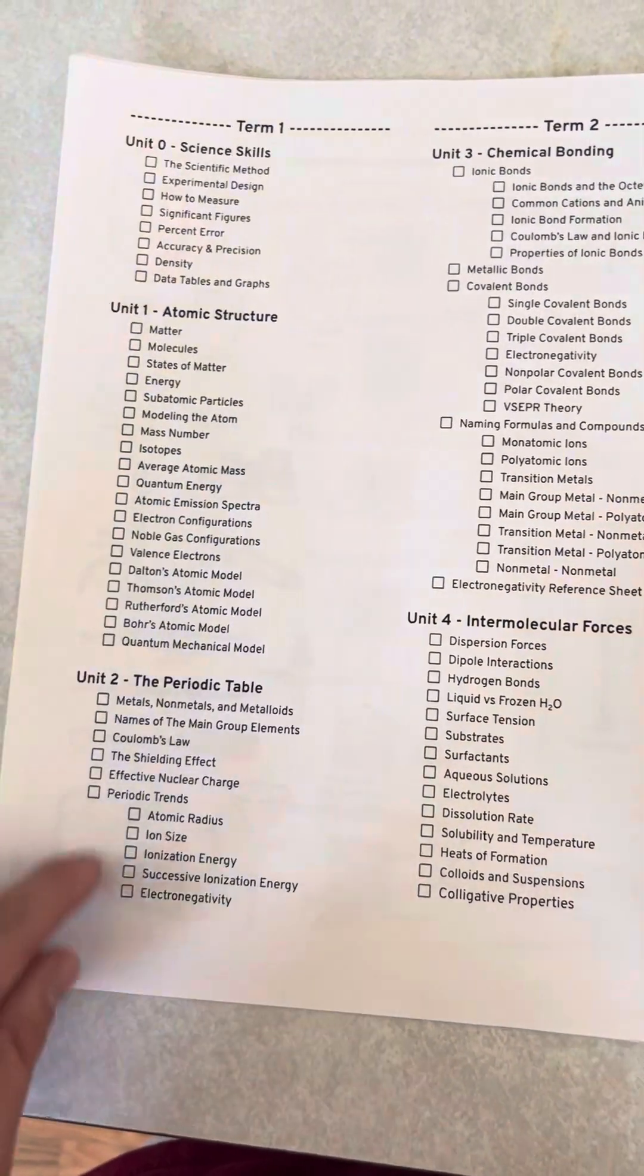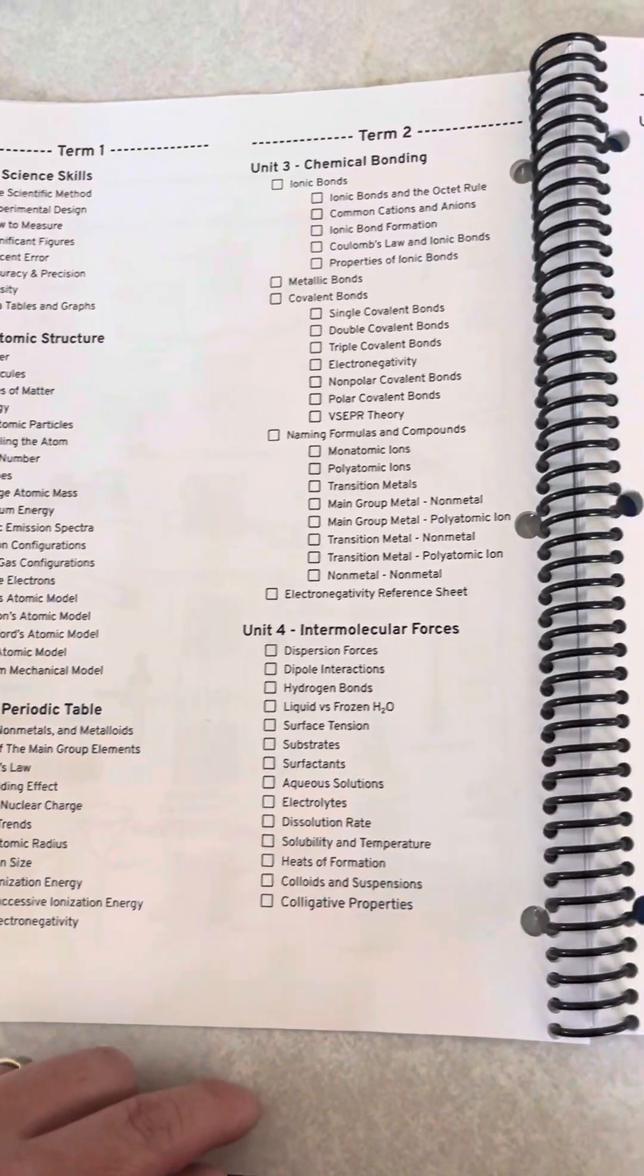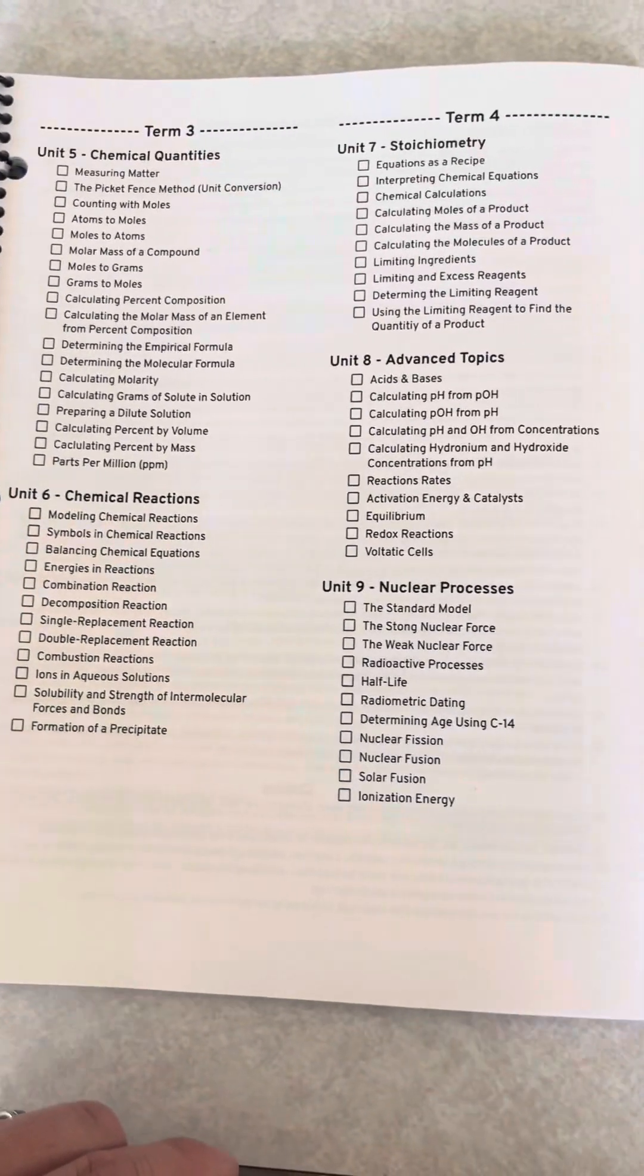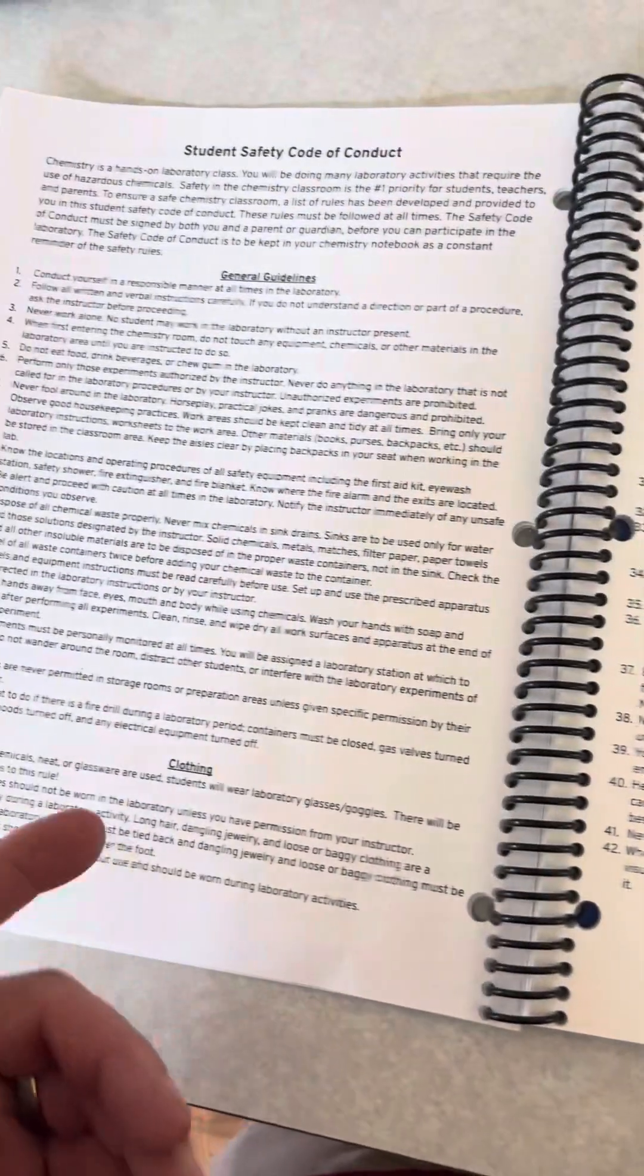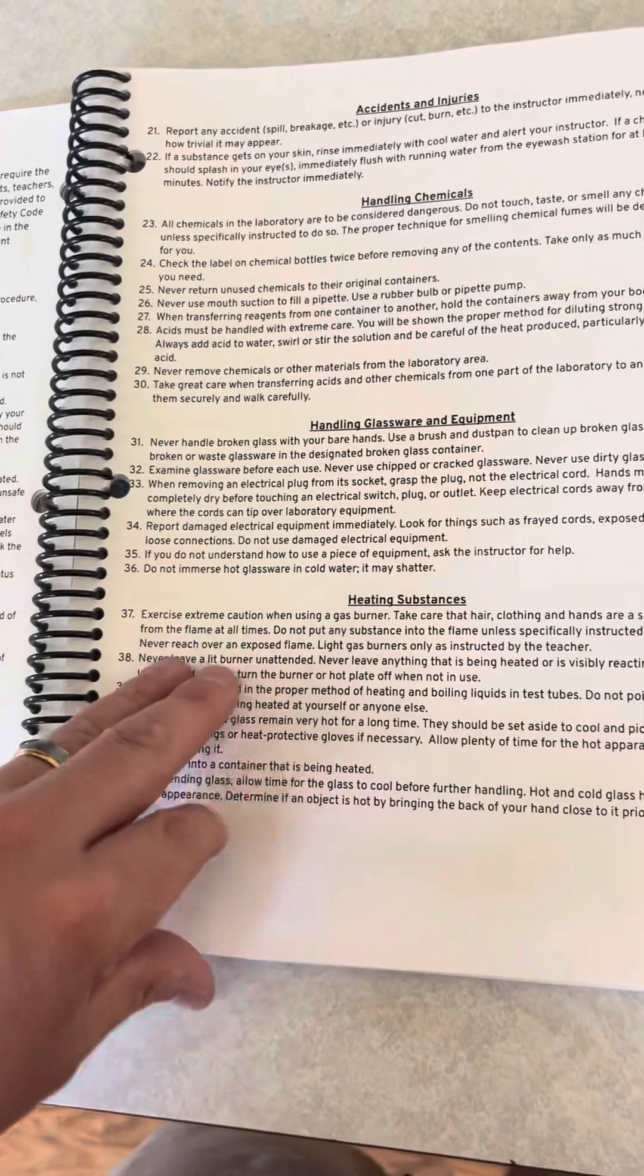So term one, we're going to cover all this material. Term two, term three, term four, and then that's the whole school year. So we're going to mark these off as we go. Here is my safety code of conduct, everything that they need to be safe in the lab, and then we start.